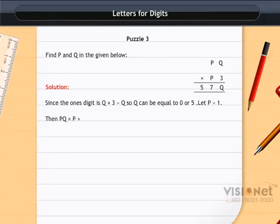Then PQ×P×3 can be at the most equal to 15×13=195. So P is not equal to 1.